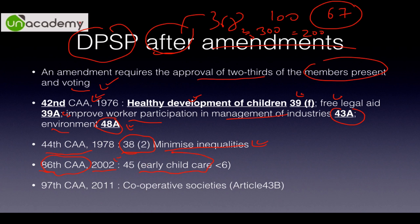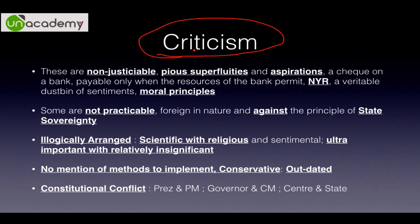The 86th Constitutional Amendment Act of 2002 deals with early childhood care for children less than six years of age under Article 45. Earlier it provided education within 10 years of the constitution up to 14 years of age, but since 6 to 14 years is now covered under the Right to Education — made a fundamental right under Article 21A — the age was reduced to less than 6 for early child care. One of the latest amendments is the 97th, making the total 99 amendments, adding cooperative societies under Article 43B.